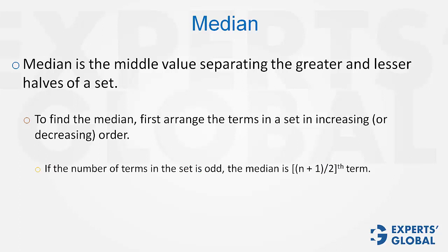If the number of terms in the set is odd, the median is the middle term, n plus 1 upon 2th term.